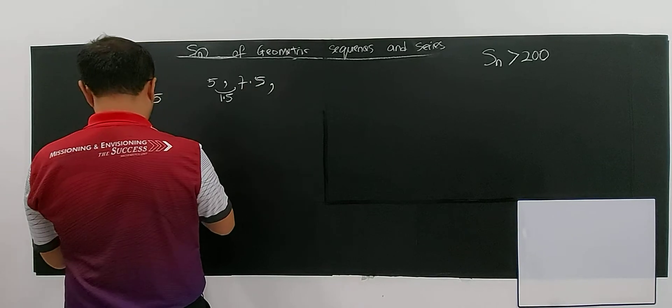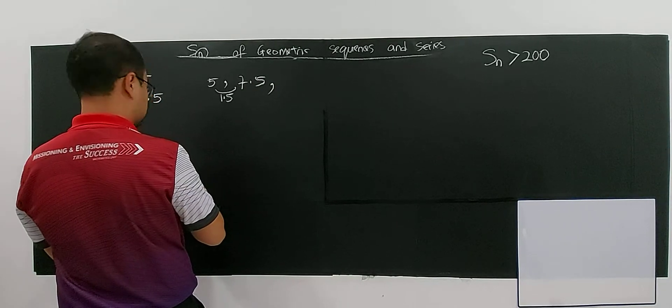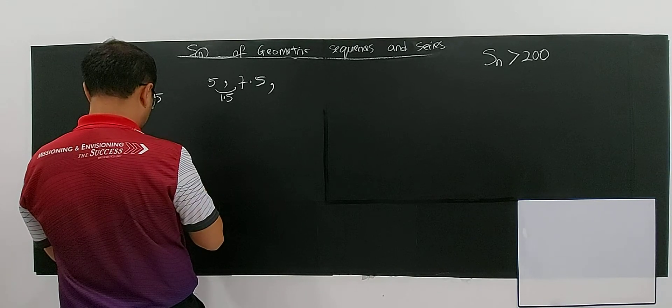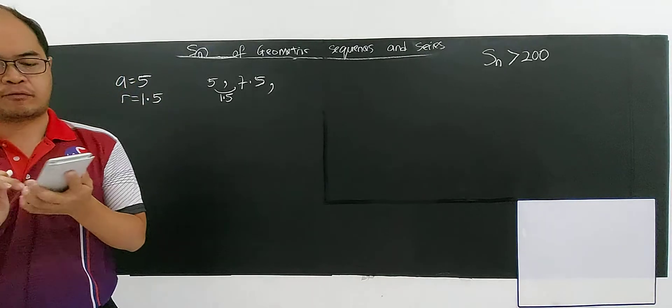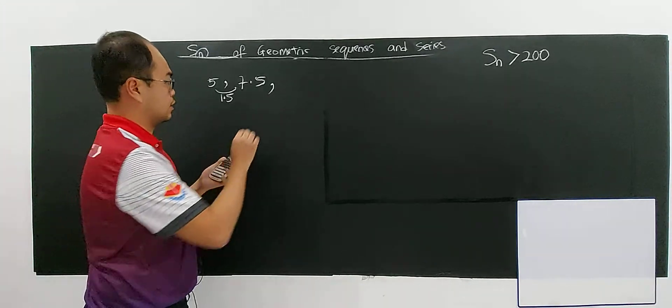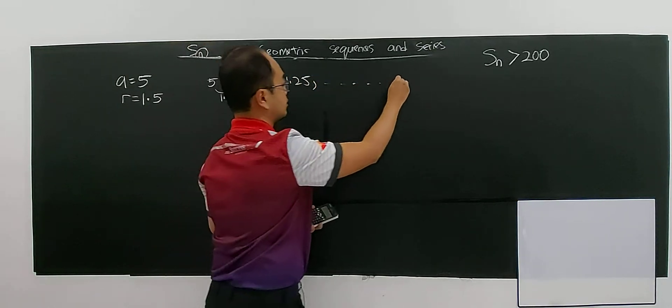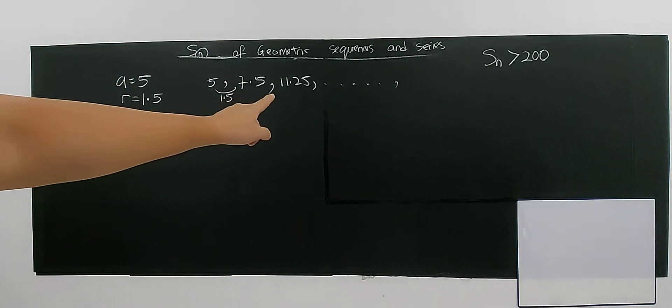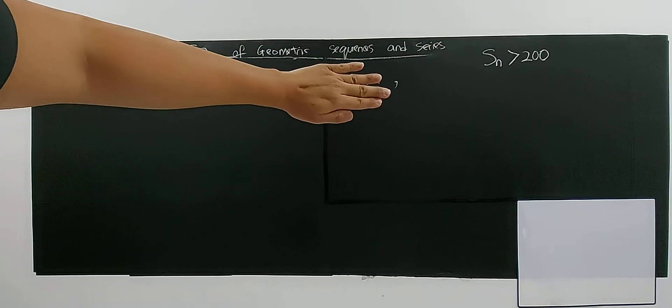If you multiply 1.5 again, you will have 7.5 multiply 1.5, you have 11.25. What can you observe? What can you ask? The number getting bigger and bigger and bigger. For this question, you don't need to write out this thing, but I want to tell you the meaning here is, if you multiply, the number getting bigger and bigger.